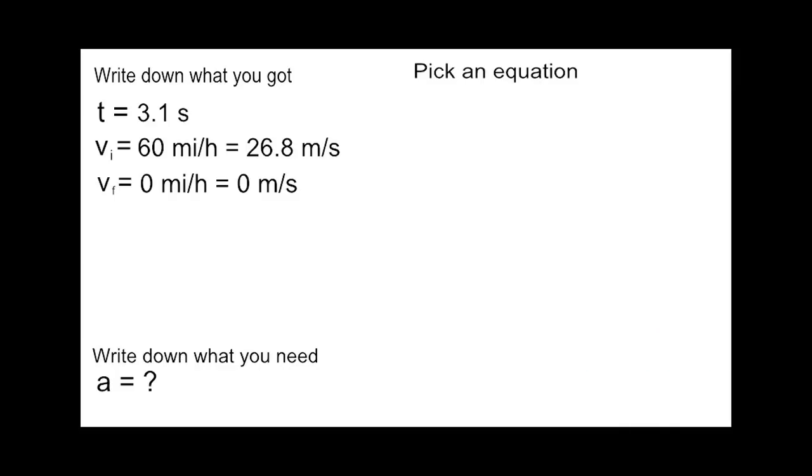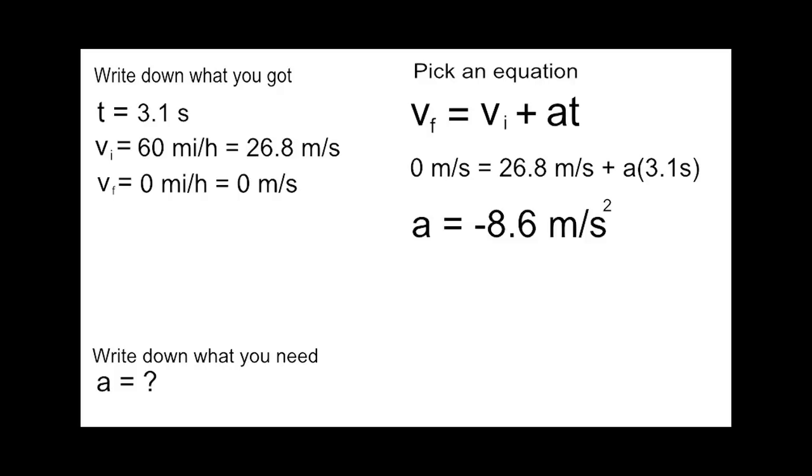vf equals vi plus at, and then sub in our values. The final velocity is zero, the initial is 26.8, and the time is 3.1, which gives us an acceleration of negative 8.6 meters per second squared.